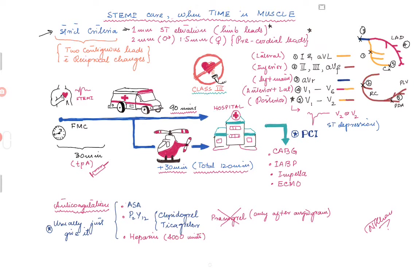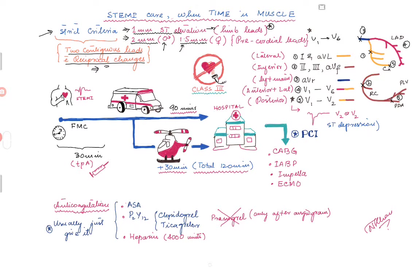The criteria for STEMI is a very defined and preset criteria. You have to have 1 mm ST elevation in the limb leads — that can be II, III, aVF, and aVR — or 2 mm ST elevation in the precordial leads for male patients. For female patients, it is a stricter criteria of 1.5 mm in the precordial leads V1 through V6. It also has to be present in three consecutive beats.